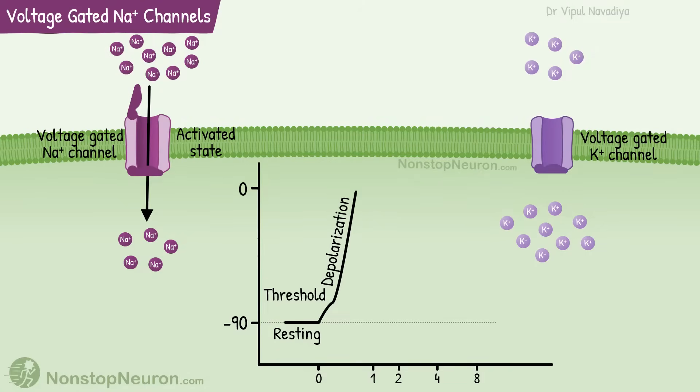Depolarization causes inactivation gates to close. Thus, the channel takes inactivated conformation and the flow of sodium stops. At the same time, potassium channels open causing an efflux of potassium. Once the resting membrane potential is re-established, the channel returns to the closed or resting configuration.